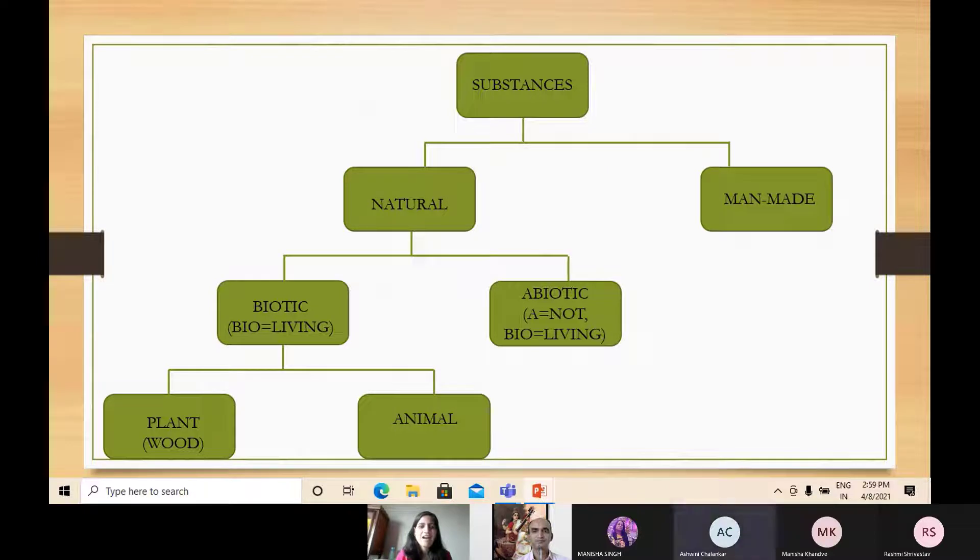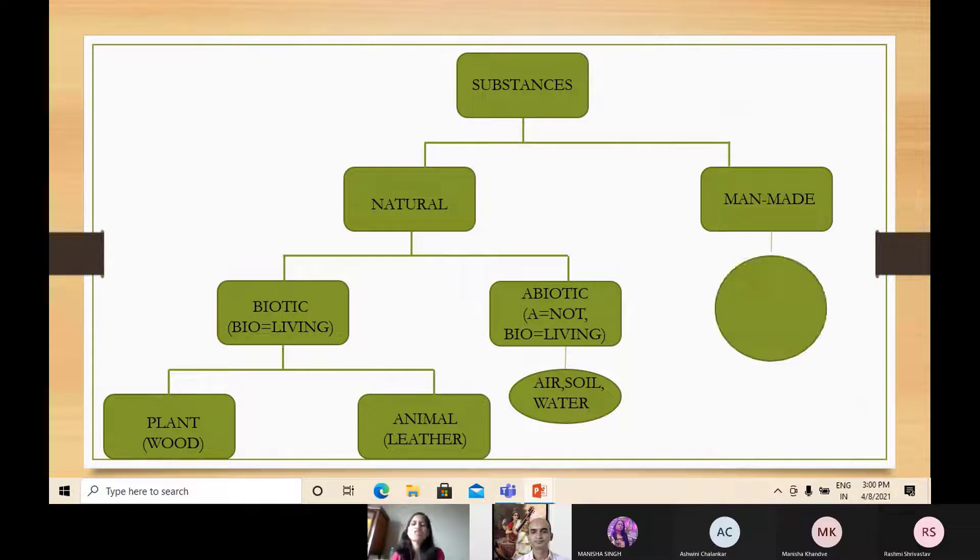Stone, table, chair. Okay, no no no. We are talking about natural substances, right? So the abiotic substances are air, soil, and water. Stone is a natural substance, but when we say chair, all these substances are called as man-made substances. Can you define man-made substances?